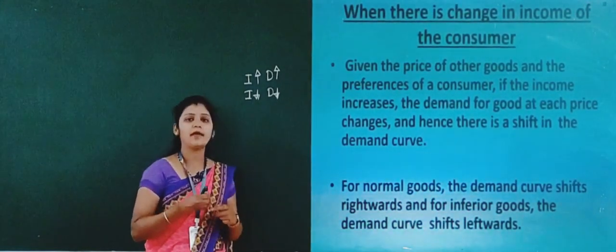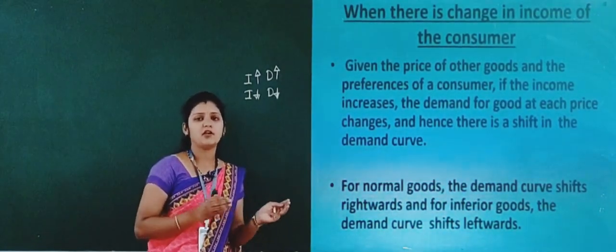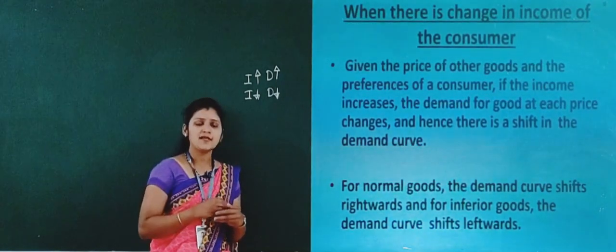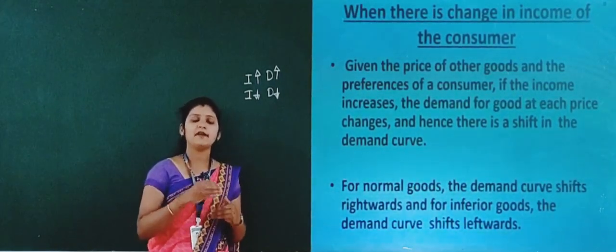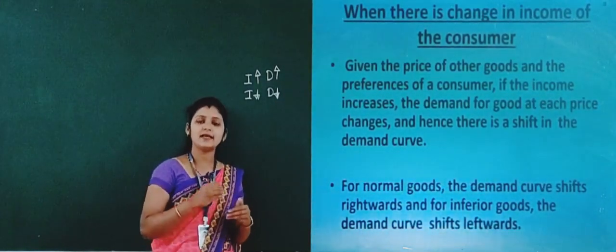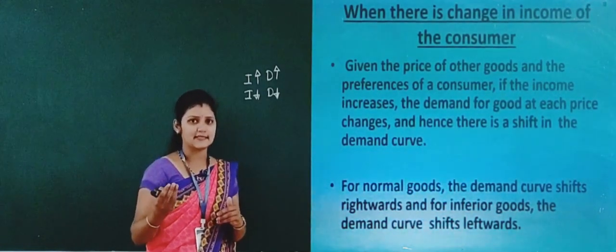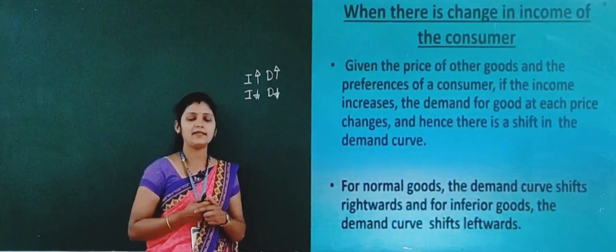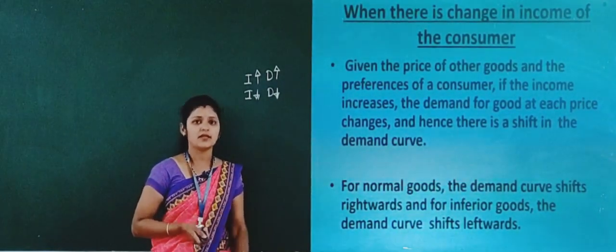Inferior goods are the opposite of normal goods. When the consumer's income increases, demand for inferior goods decreases. And when the consumer's income decreases, demand for inferior goods increases. Examples of inferior goods are finger millet, pearl millet, and foxtail millet.